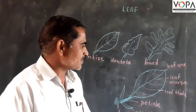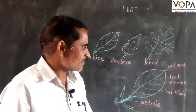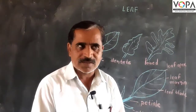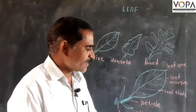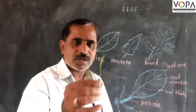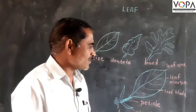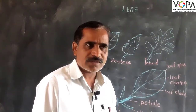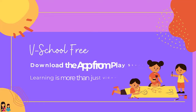In some plants the leaf blade is divided into many parts called leaflets, and this leaf is called a compound leaf. So there are two types of leaves: one is the simple leaf and the other is the compound leaf.